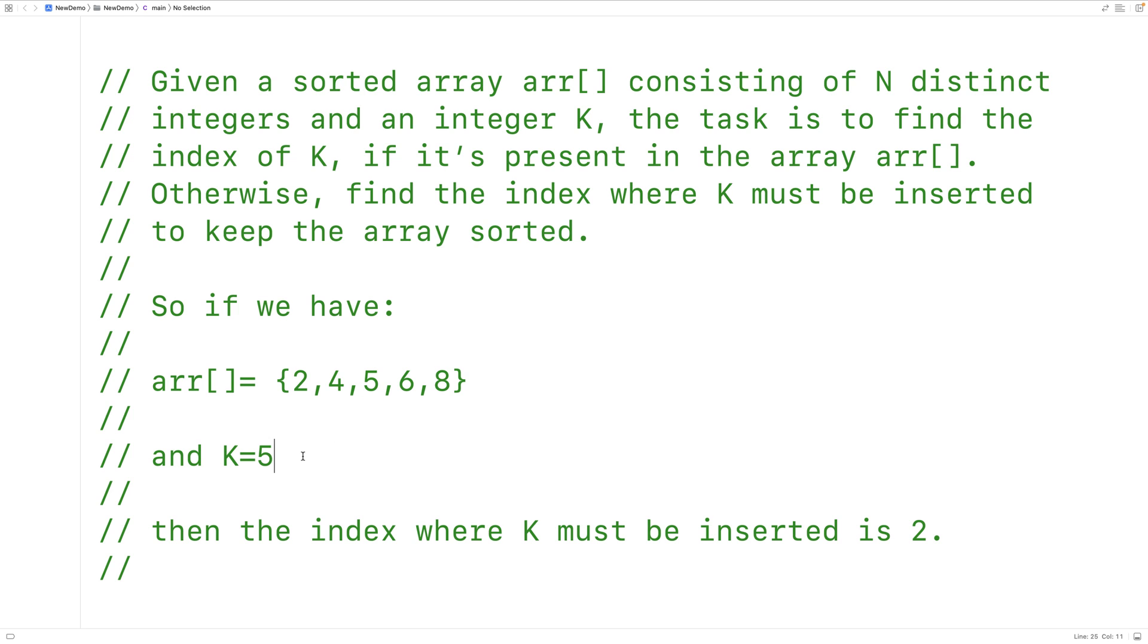Now, what if K was 6? In that case, we would check 2, 2 is less than 6. We would check 4, 4 is less than 6. We would check 5, 5 is less than 6. We check 6, and at that point, 6 is equal to 6. And we know that the index for K is 3, because we have index 0, index 1, index 2, and then index 3.